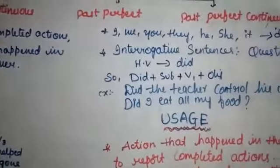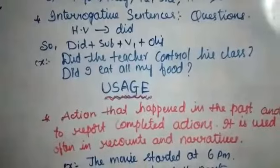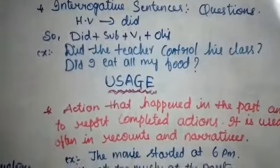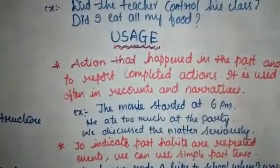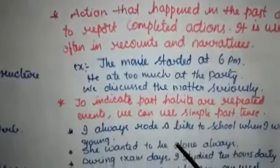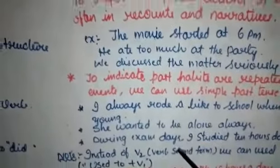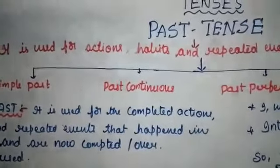To recap, the uses of simple past are: one — actions that happened in the past and to report completed actions, used often in recounts and narratives; two — to indicate past habits or repeated events. Note: instead of V2, we can use 'used to + V1'. Tomorrow in the next video I will explain past continuous. Thank you.